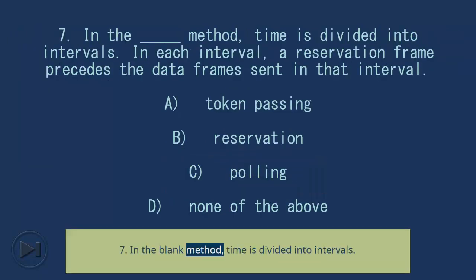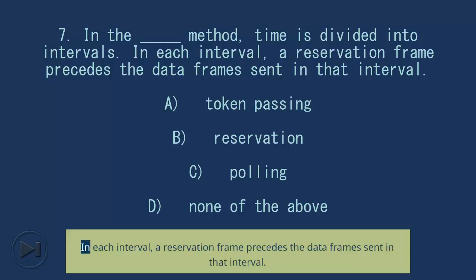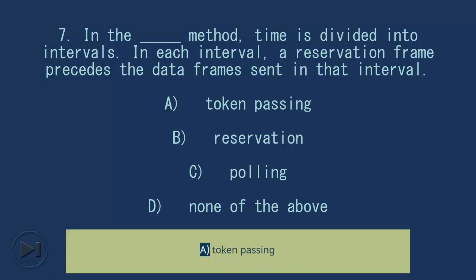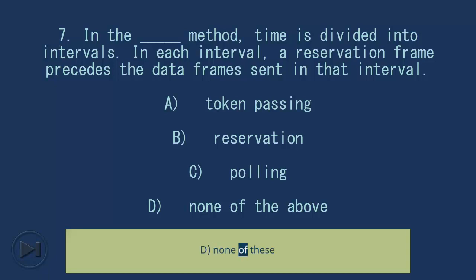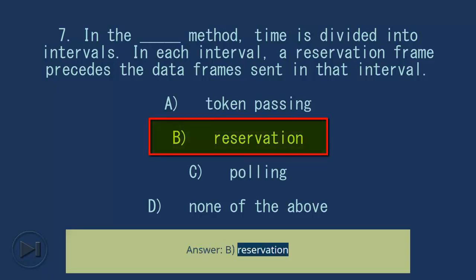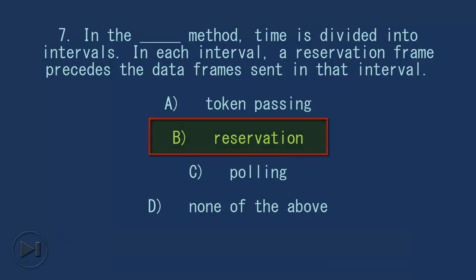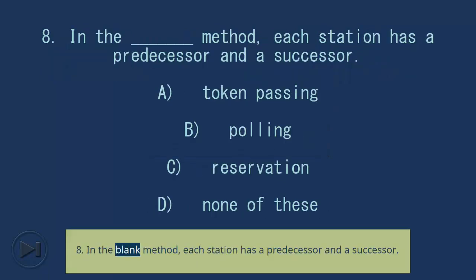Question 7: In the blank method, time is divided into intervals; in each interval a reservation frame precedes the data frame sent in that interval. A) Token Passing, B) Reservation, C) Polling, D) None of these. Answer: B) Reservation.